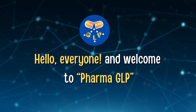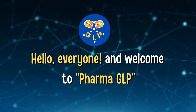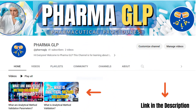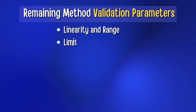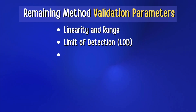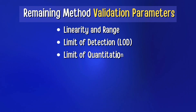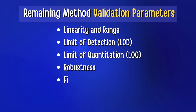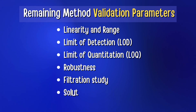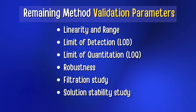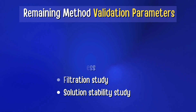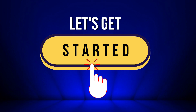Hello everyone and welcome to Pharma GLP. In continuation with my last two videos, this is the third video on analytical method validation and its parameters. In this video, we will discuss remaining parameters such as linearity and range, limit of detection, limit of quantitation, robustness, filtration study, and solution stability study. Stay tuned and let's get started.